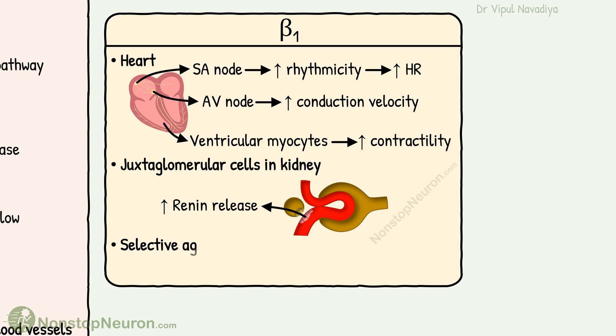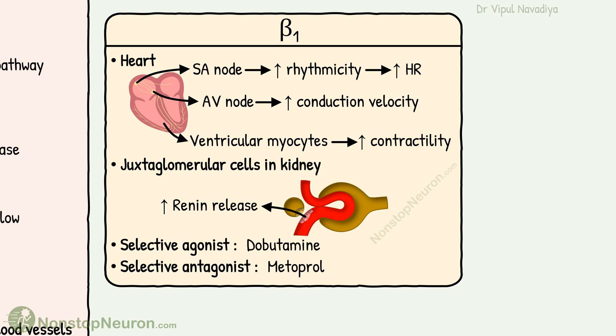Selective beta-1 agonists include dobutamine, and selective beta-1 antagonists include metoprolol and atenolol. So that was our beta-1 receptor.